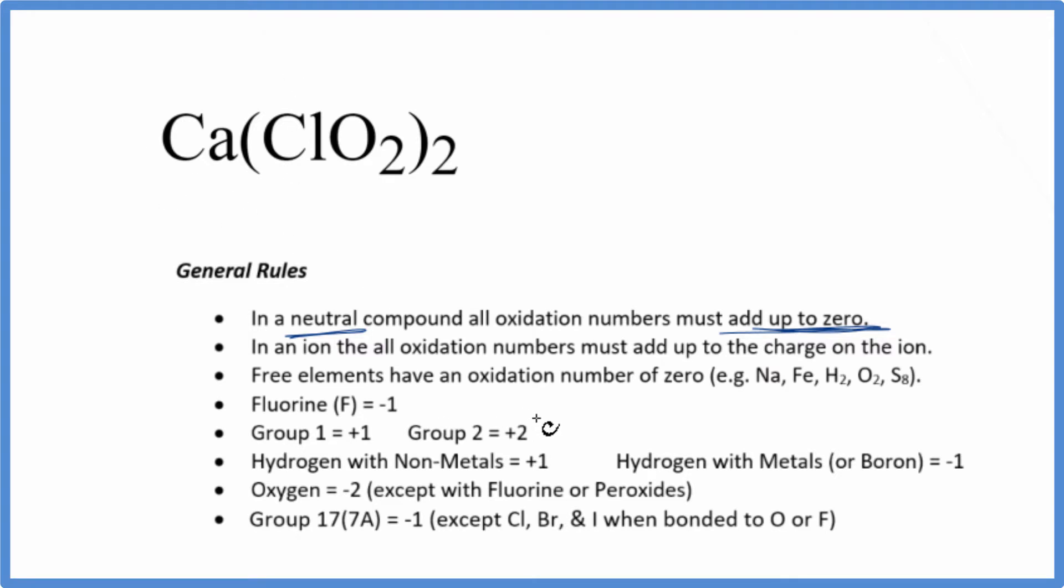We also know that calcium is in group two on the periodic table. It'll have a plus two oxidation number. Chlorine, we don't know. We have to look at what that's bonded to to figure out its oxidation number, but oxygen almost always has a minus two oxidation number.